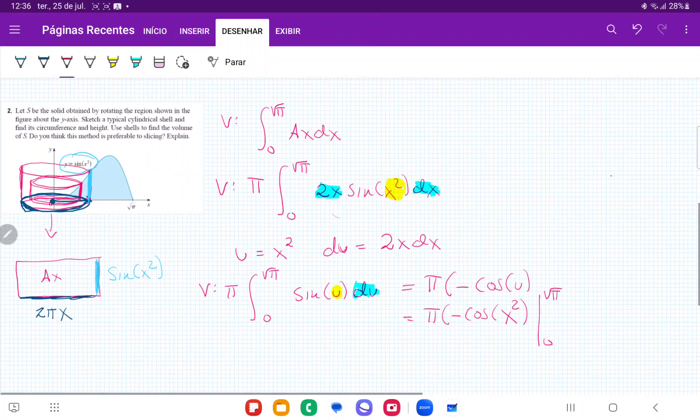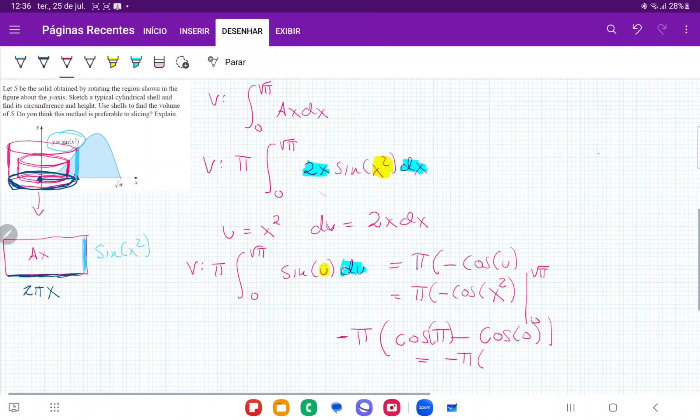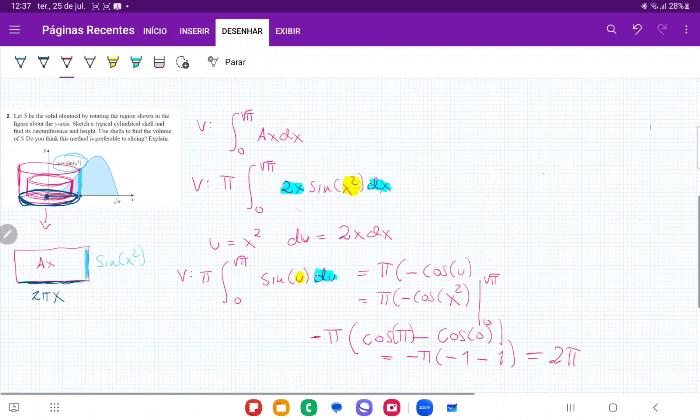So once we have this, we are basically just going to evaluate these boundaries, so that is pi, I'm going to put the negative outside, negative pi times cosine of root pi squared, so it's just cosine of pi, minus cosine of 0 squared is just cosine of 0. And then this is equal to negative pi times cosine of pi is negative 1, and then minus cosine of 0 is 1. Therefore, this gives us negative pi times negative 2. And so the answer is just 2 pi, and that's the volume that we get.